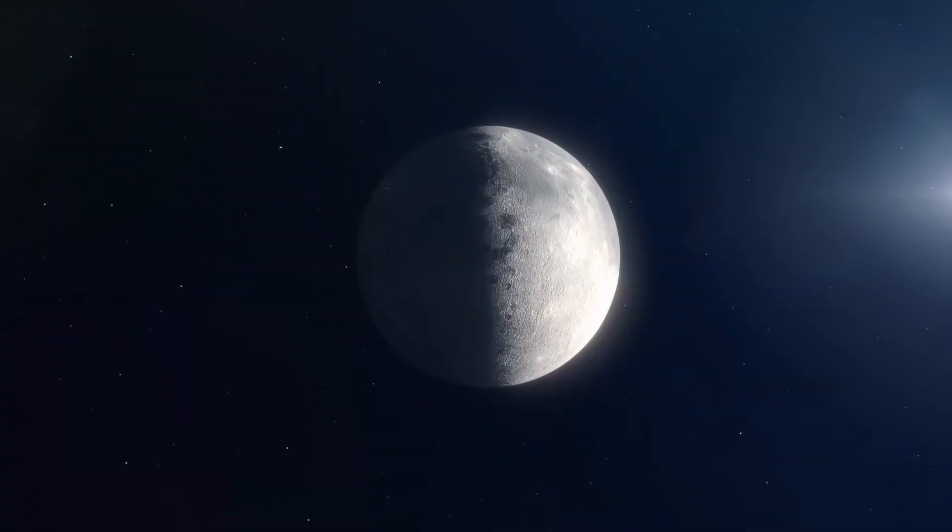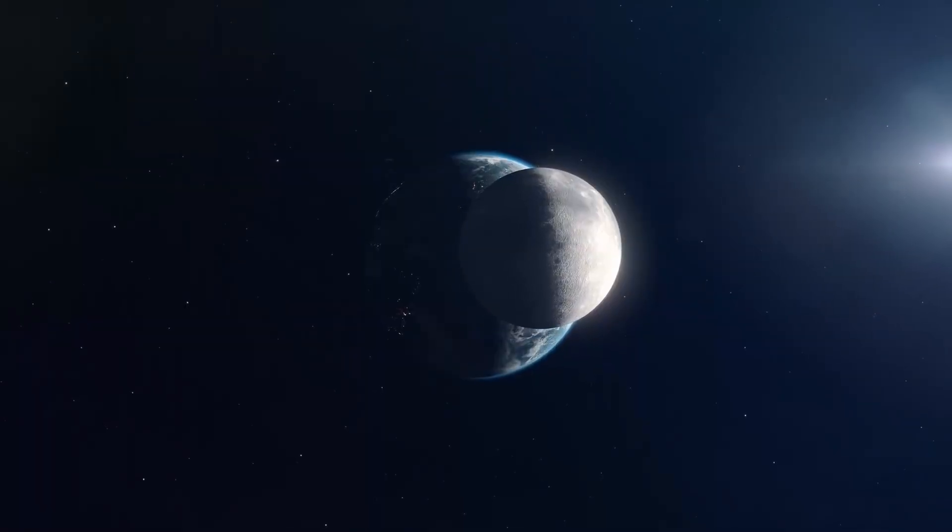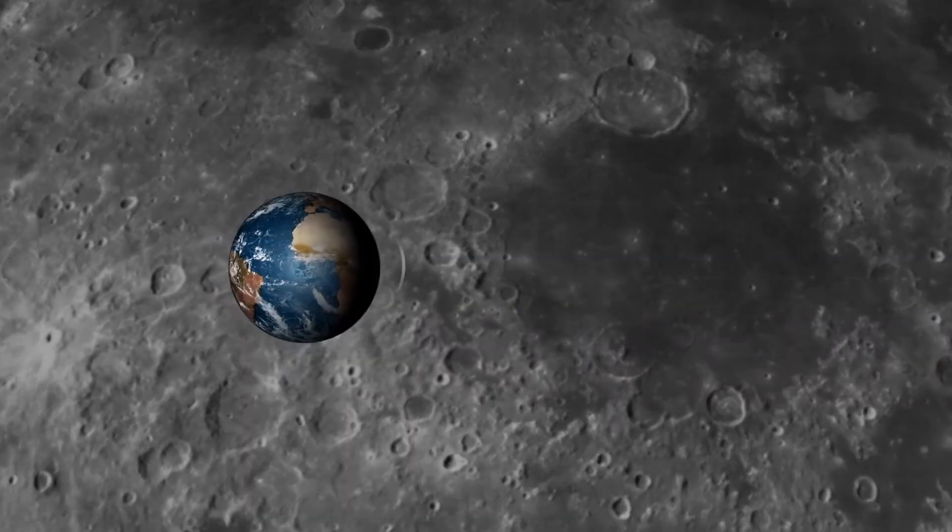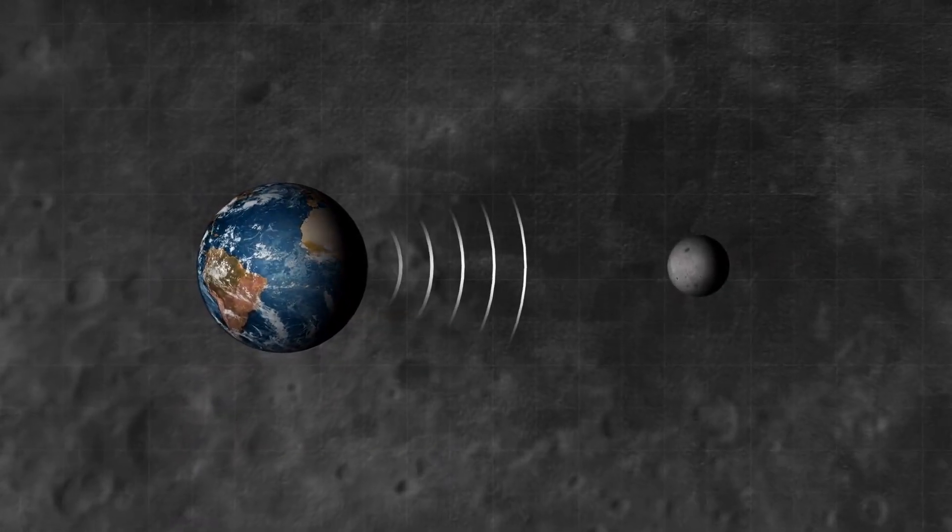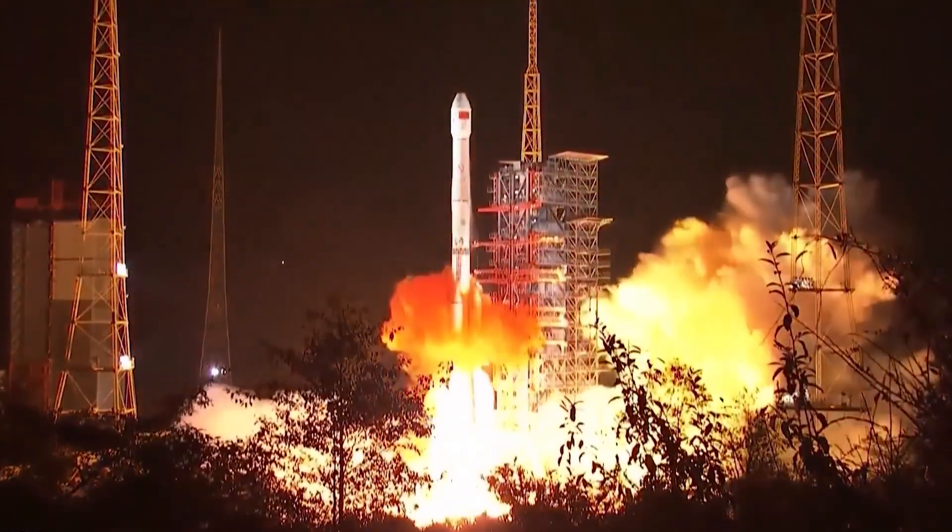When you look up at the moon, you're seeing the same face every night. That's not an illusion, it's physics. The moon is tidally locked to Earth, meaning only one side ever faces us. For centuries, that's all we knew, the near side. But the far side? That was pure mystery. Until 2019.